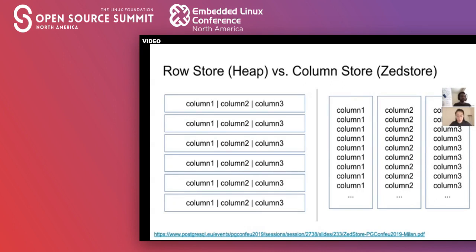This diagram is the kind you'd probably see whenever someone talks about row store and column store. I put one here as well because of peer pressure. But keep in mind that this is an abstract view, and the actual implementations of a row store or column store could look different from this.